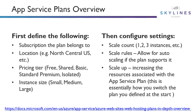App Service Plans represent the collection of physical resources under the covers that are going to host our apps — this is where our apps are going to run. First we have to define the following: the subscription the plan belongs to, the location (such as North Central US), the pricing tier (free, shared, basic, standard, premium, or isolated — we'll talk more about that shortly), and the instance size, which is the size of the VMs running under the covers.